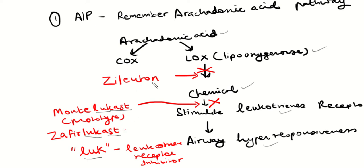So zileuton works differently from montelukast and zafirlukast. Zileuton actually prevents lipooxygenase from creating these chemicals. And montelukast and zafirlukast say, you know what, the chemical is produced, but I'm going to prevent these receptors from getting stimulated by this chemical. So there's a very slight difference there.